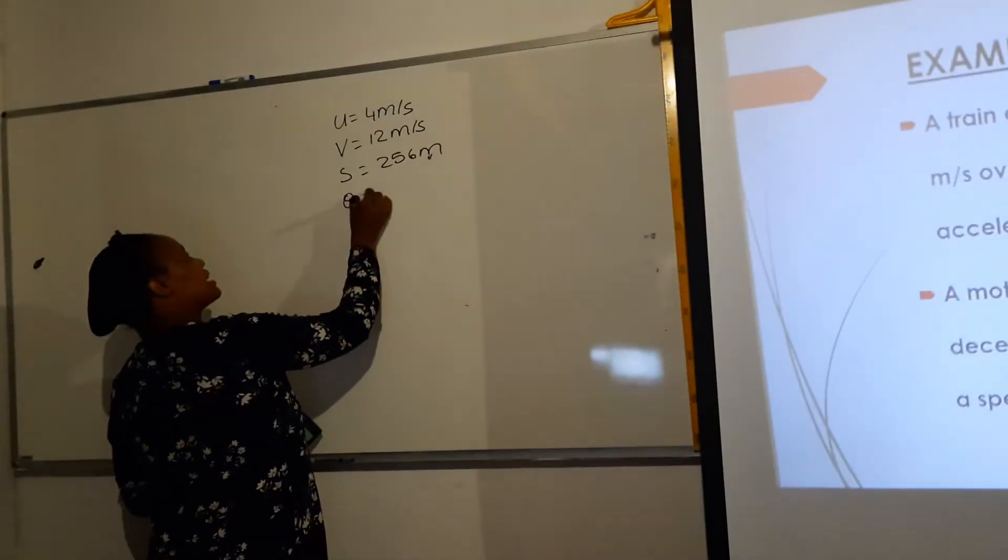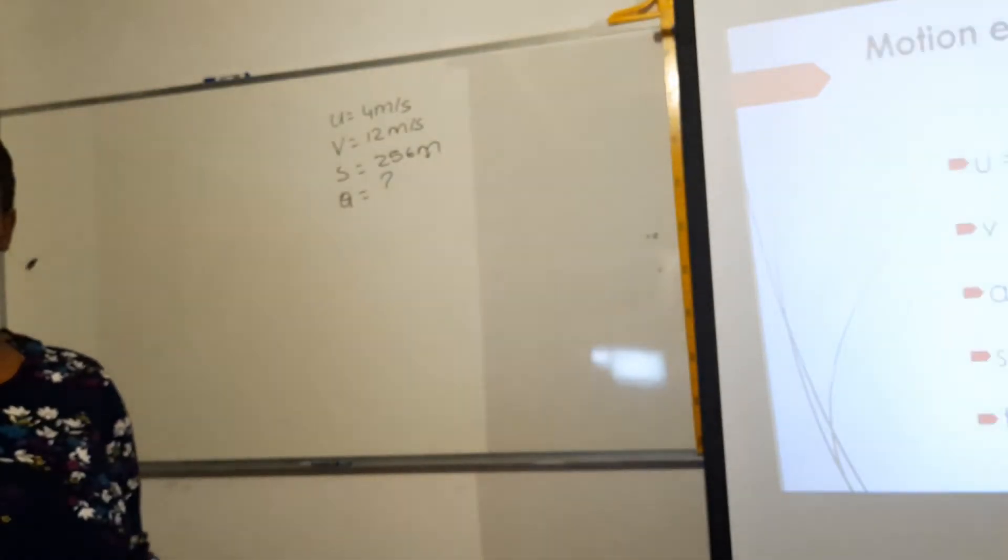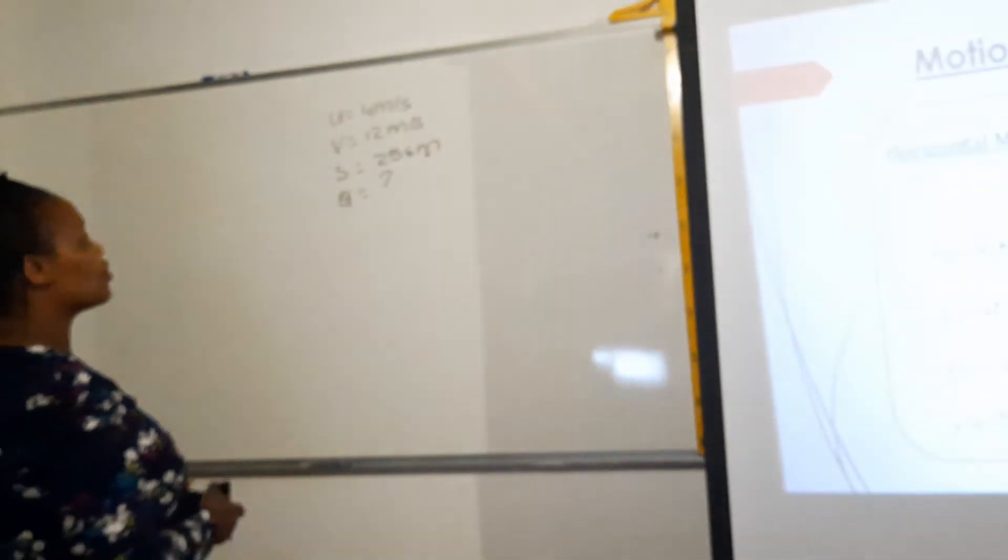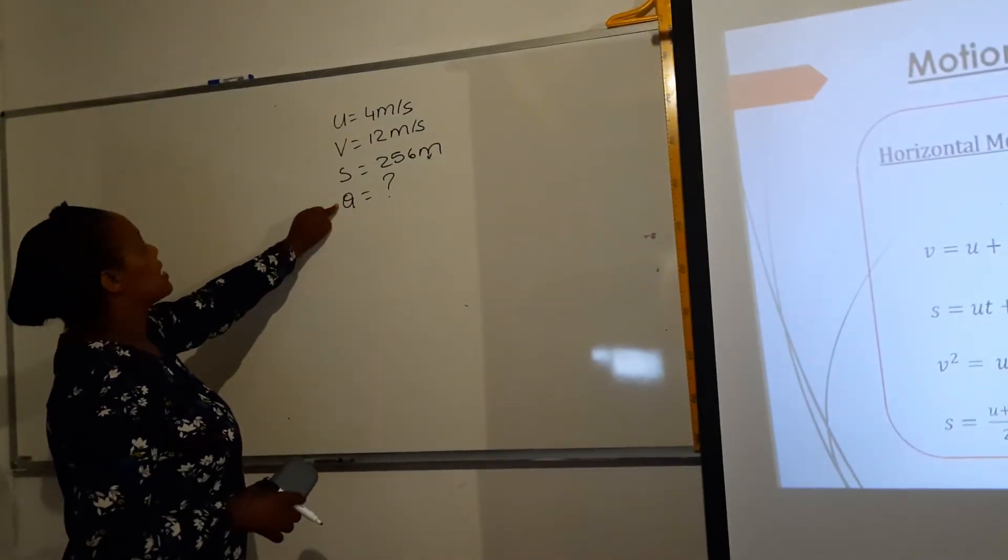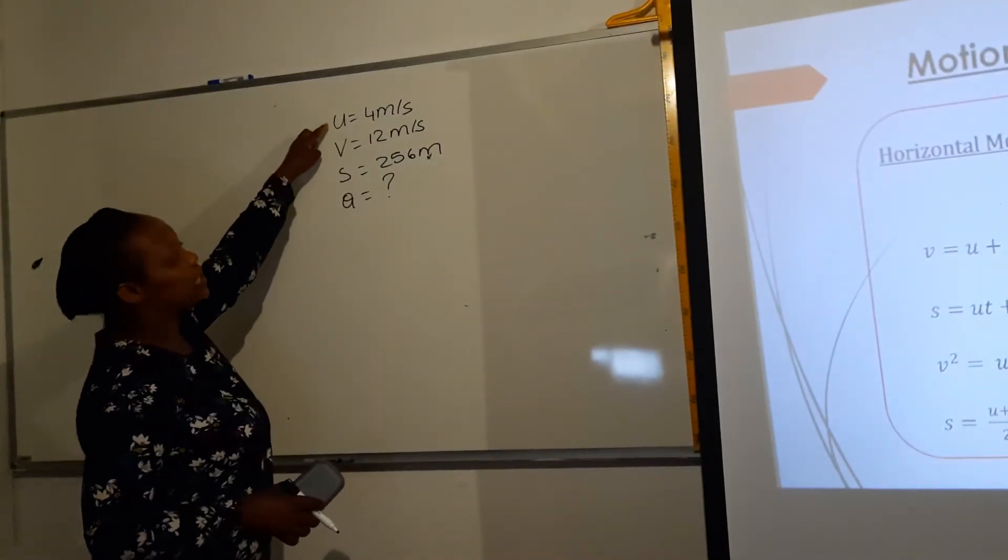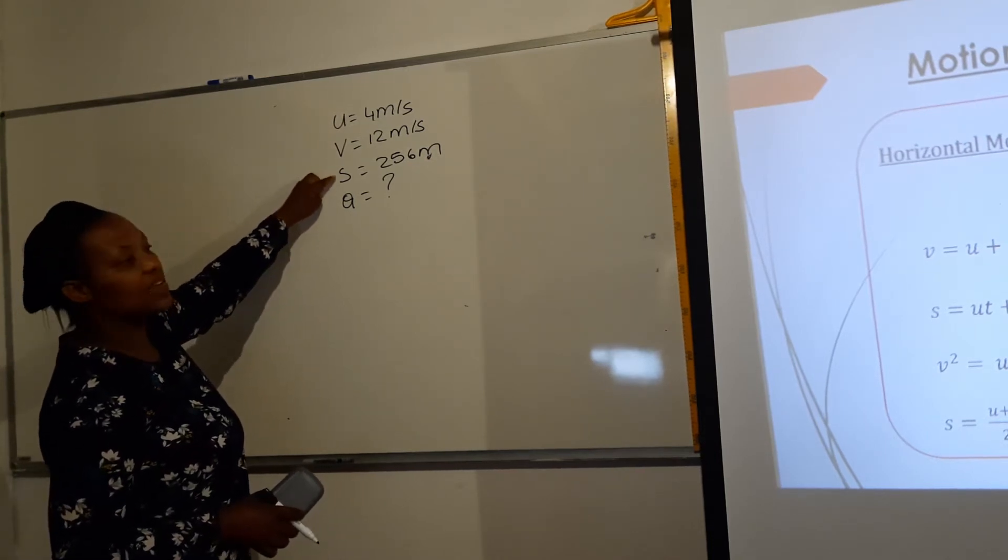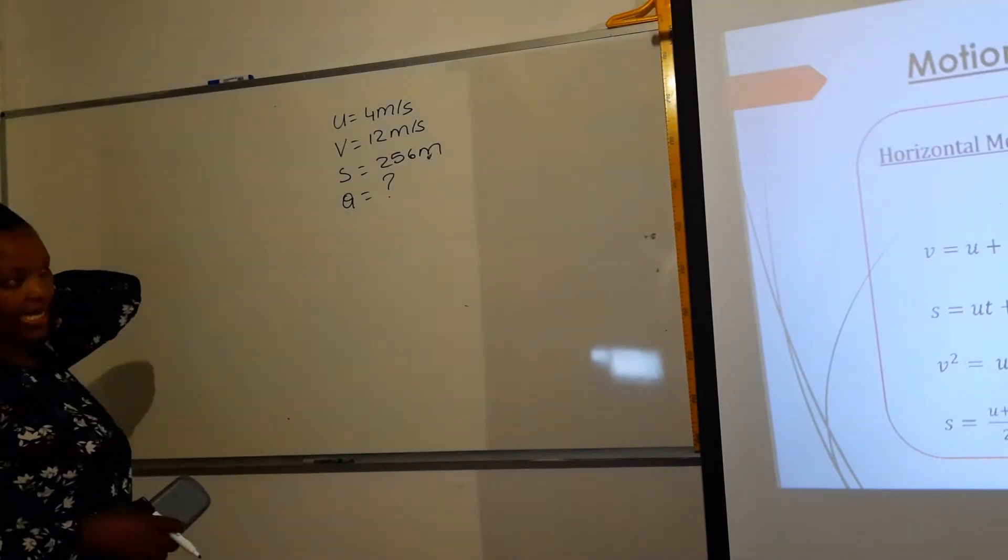Calculate the magnitude of the acceleration. Then you go into your motion equations to check which one to select. Now the first one says v equals u plus at. So we're looking for a. It contains a. Do we have u given? Yes. Do we have v given? Yes. Do we have t given? No, we don't have t, so we can't use the first one.